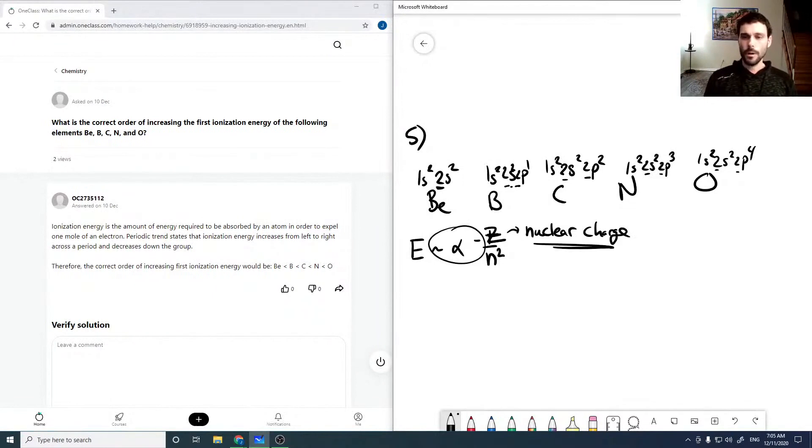Across this, our nuclear charge is increasing. Beryllium nucleus is 4 plus, boron nucleus is 5 plus, carbon is 6, nitrogen is 7, and oxygen is 8.